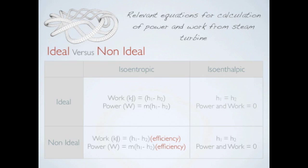As for an isoenthalphic system, the enthalpy at the inlet and the exhaust is essentially constant for both ideal and non-ideal conditions. As a result, the power and work done for both systems is zero. In the equation, H represents enthalpy.